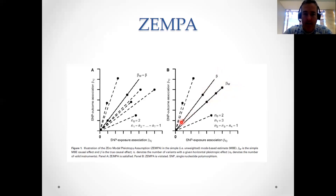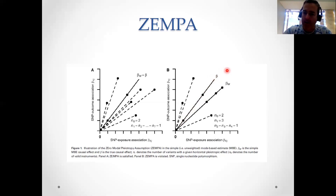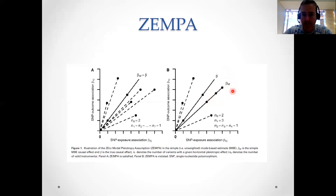It's actually a smaller group with only two SNPs which is an accurate reflection of the true causal effect. These two SNPs are valid instruments and don't show any pleiotropy, but we get the wrong answer because we've chosen the group with the largest number of SNPs, which is three here. So ZEMPA is not satisfied in panel B and the mode-based estimator gets the wrong answer.